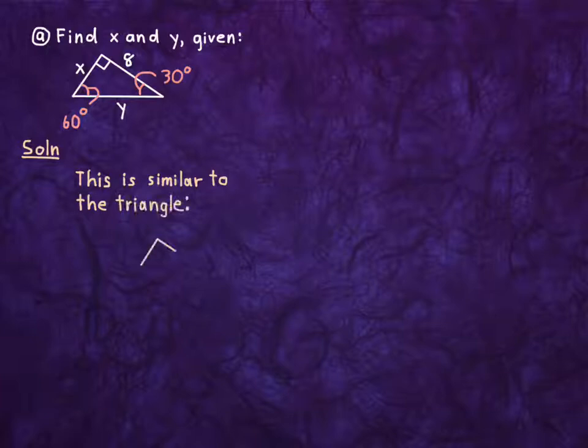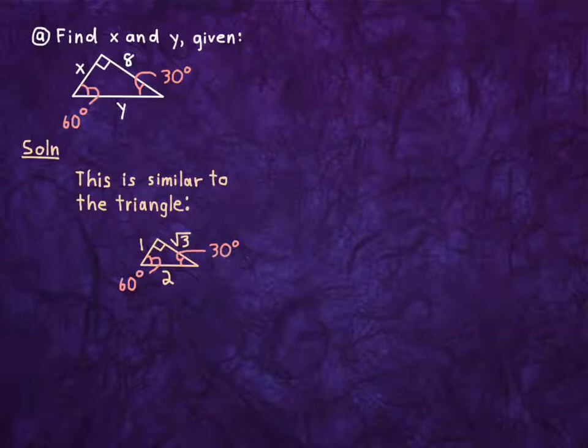I'm given this triangle with angles 60, 30, and 90. One leg is x, the one opposite the 30 degrees is x, the one opposite the 90 degrees is y, so the hypotenuse is y. And my other leg, the one opposite 60 degrees is 8. You should know right away that y is bigger than 8 and x is smaller than 8, because the largest side is opposite the largest angle, the smallest side is opposite the smallest angle. The medium side is opposite the medium angle. It's like the three bears and their beds, or their chairs or whatever.